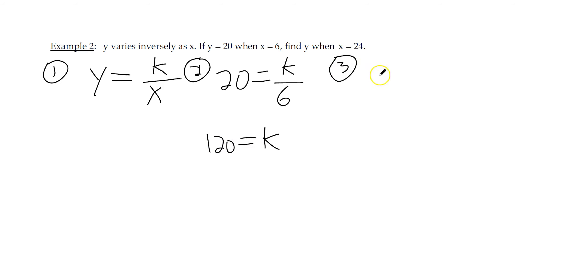The third basic thing is to use our formula, y equals, we know what k is, 120. And they gave us x of 24. Okay, so we can now, to simplify this, 120 divided by 24 works out really nicely as 5.